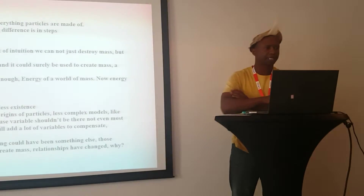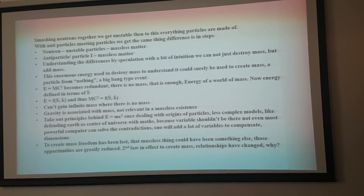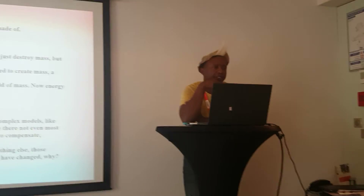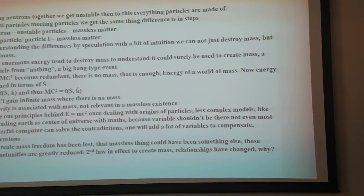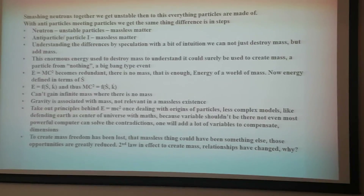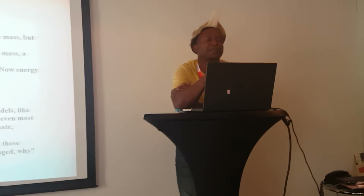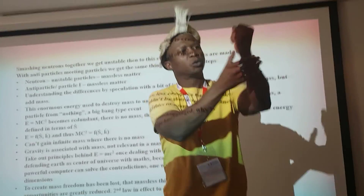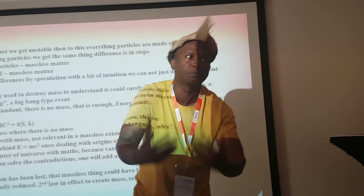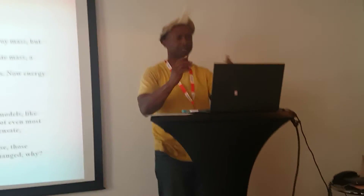Further questions: smashing neutrons together, we get unstable particles and massless matter — you see this in a collider. With anti-particles meeting particles, we get the same thing. We cannot just destroy mass, but we can add mass. This enormous energy used to destroy mass could surely be used to create mass — a particle from nothing, a Big Bang type event. But it's not from nothing, because we know a neutron doesn't become nothing — it is something, but it has no mass and becomes unstable because it doesn't have the right mass to be stable.